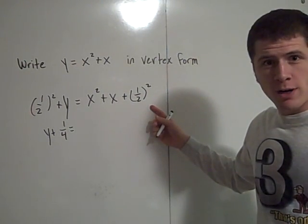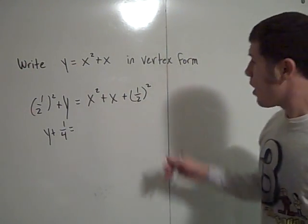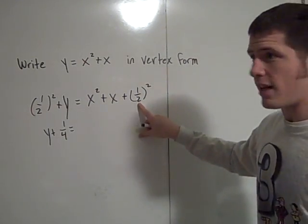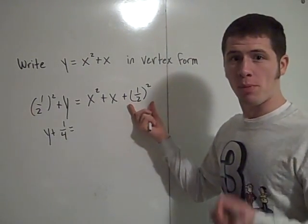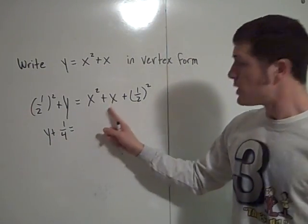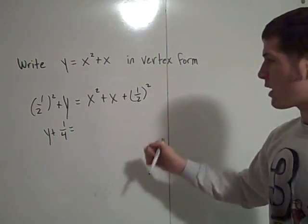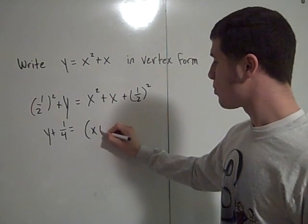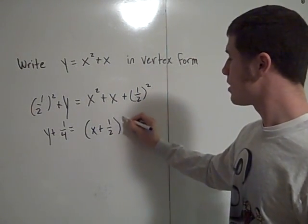But that's a perfect square trinomial. So 1 half times itself is 1, 2 squared, and 1 half plus itself is 1. So I can factor this like a perfect square trinomial. This is just x plus 1 half squared.